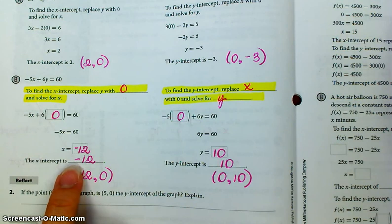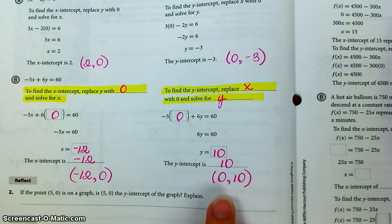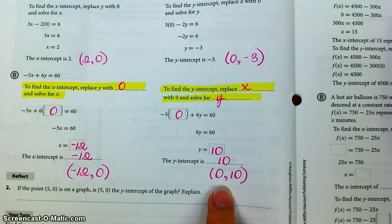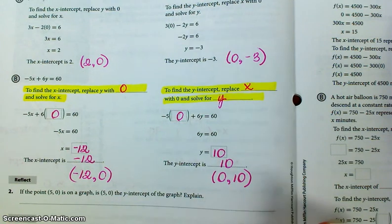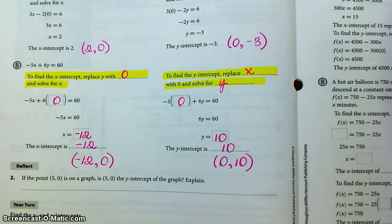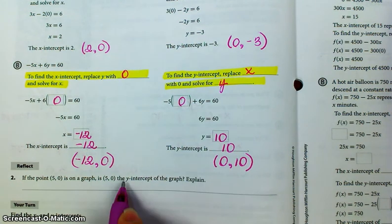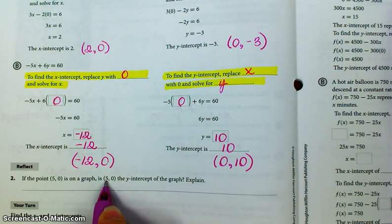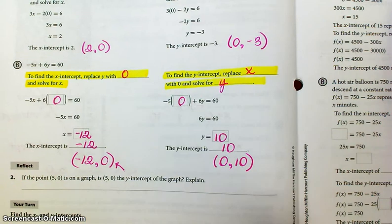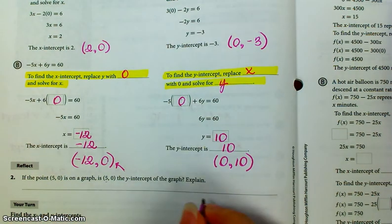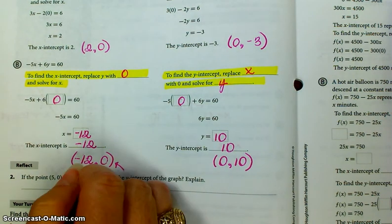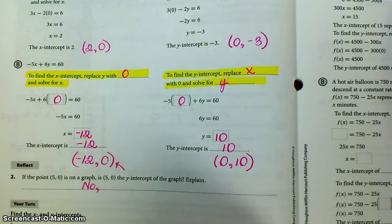The x-intercept is negative 12. Ordered pair would be negative 12, 0. The y-intercept is 10. The ordered pair would be 0, 10. All right, if the point 5, 0 is on a graph, is 5, 0 the y-intercept of the graph? Explain. Okay, which one has an x with a number and a y with a 0? That's going to be your x-intercept. So is this the y-intercept? This is no. It is the x-intercept.